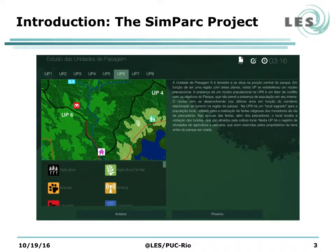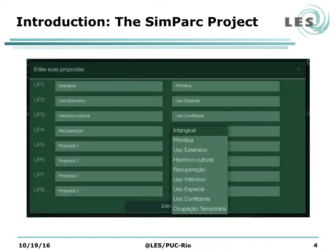This screen shows an area of the park. Each area of the park has a different set of characteristics, such as a plantation, a road, a waterfall, maybe some community living there, among others. In this screen, the player selects which type of level of conservation they want.